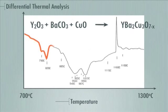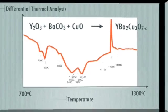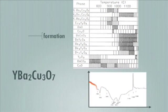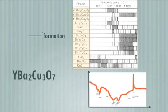The differential thermal analysis of the yttrium barium copper oxygen formation from the mixture of the three constituent oxides reveals many complex reactions. There are 14 phases present during such formation of the YBa2Cu3O7-x compound, which will be different if different rare earth elements are used.